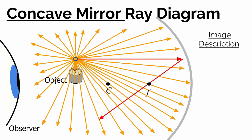Rule two: light coming from the focal point direction bounces off parallel to the principal axis. Rule three: light coming from the center of curvature direction bounces straight back. Looking at these three reflected light rays, where does the observer think that light came from? The brain traces each ray straight back — this one back, this one back, this one back — and it appears that all three originated from one common spot. The observer sees the tip of the candle at that location.